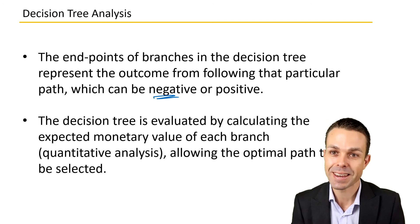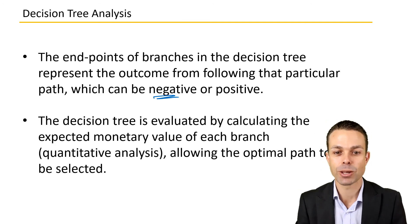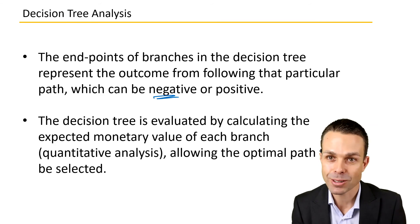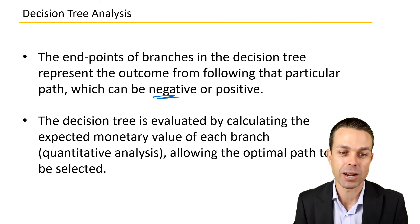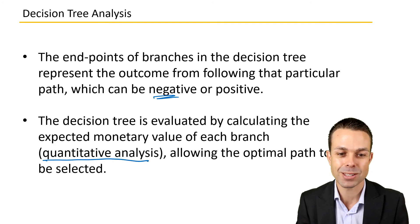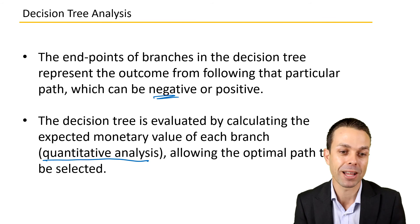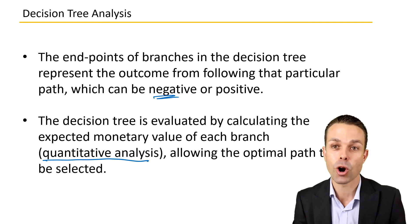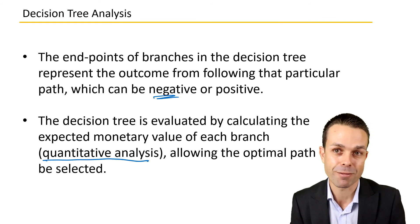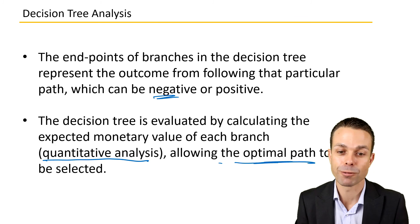The decision tree is evaluated by calculating the expected monetary value of each branch, which is quantitative analysis. That's where our qualitative and quantitative differences come into play — quantitative analysis focuses on the cost or the monetary value, and we want to know what that cost is going to be.